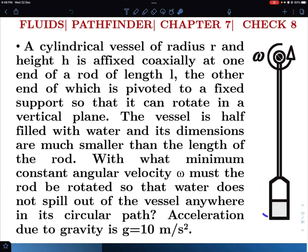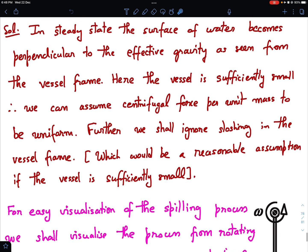We want that this water should not spill over anywhere in the circular path. And acceleration due to gravity is given as g equals 10 meter per second squared. If you want you can give it a try and then you can have a look at my solution. I will get into the analysis right away.